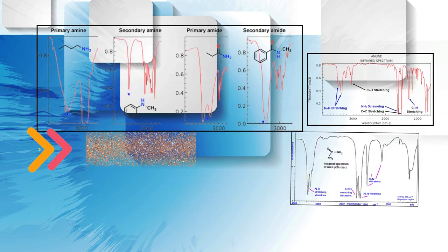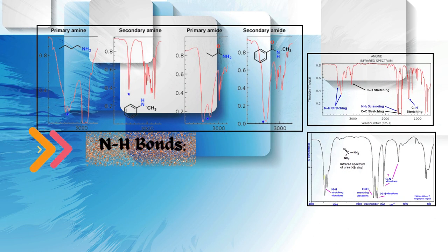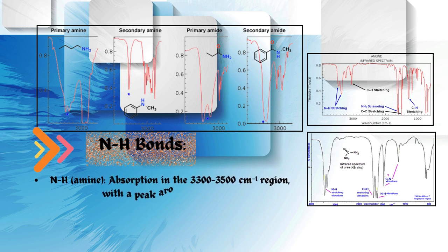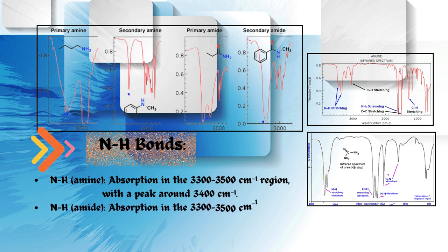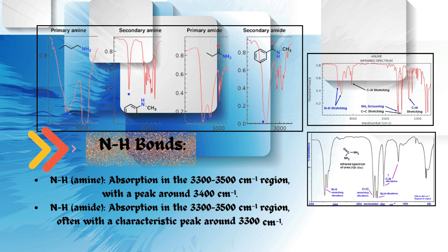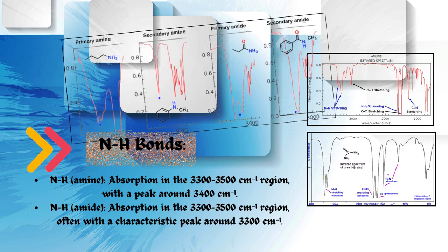Nitrogen and hydrogen NH bonds. NH in amine: absorption in the 3,300 to 3,500 per centimeter region, with a peak around 3,400 per centimeter. NH in amide: absorption in the 3,300 to 3,500 per centimeter region, often with a characteristic peak around 3,300 per centimeter.